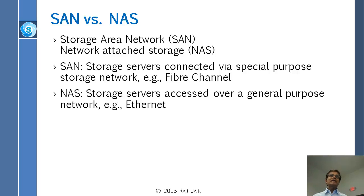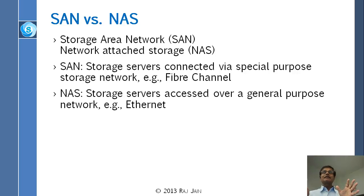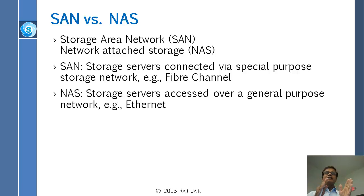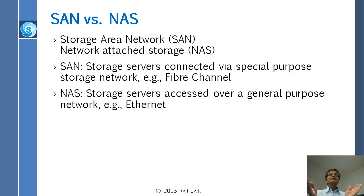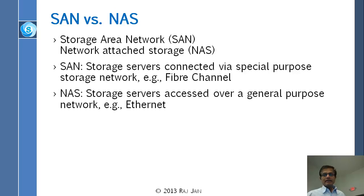Everything we have talked about so far is SAN — storage area network. We did not mention Ethernet anywhere; everything is Fibre Channel. That is SAN. As soon as you put Ethernet in, what you get is NAS — network attached storage. None of you have seen a SAN, most likely, but all of you have seen NAS. You connect your device to a server at home or here through Ethernet and you can reach a remote disk — that is NAS. SAN uses Fibre Channel; NAS uses Ethernet.